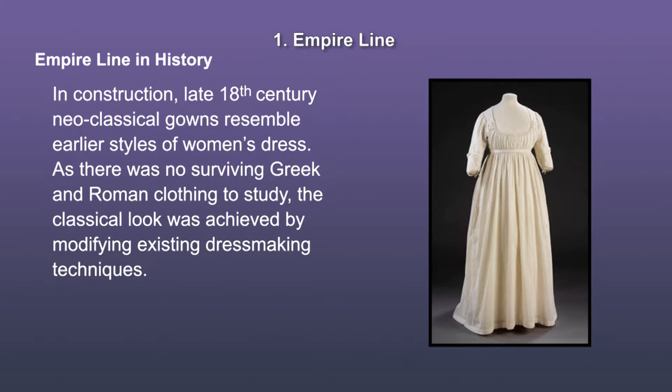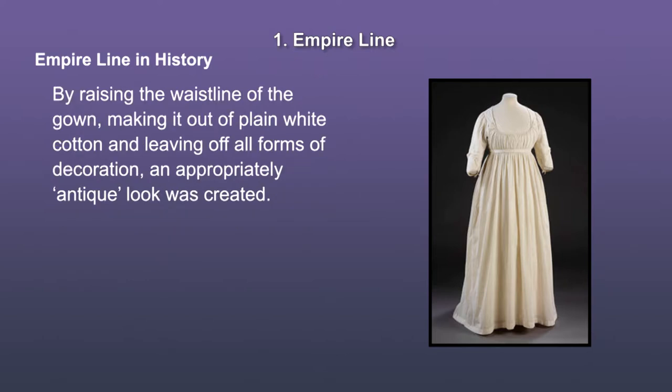Now let us look at occurrences of empire line in history. The picture shows a gown from 1797 to 1805 belonging to the United Kingdom. It is made out of cotton, linen, linen thread and tape, machine woven and hand sewn. In construction, late 18th century neoclassical gowns resemble earlier styles of women's dress. By raising the waistline of the gown, making it out of plain white cotton and leaving off all forms of decoration, an approximately antique look was created.